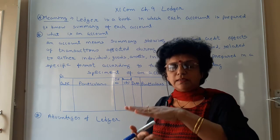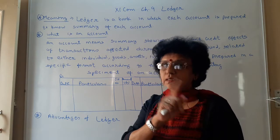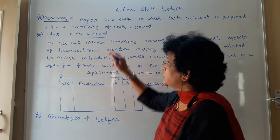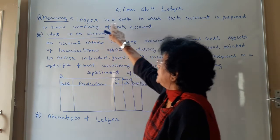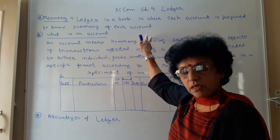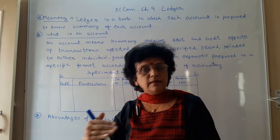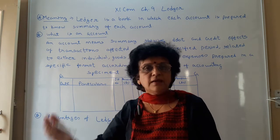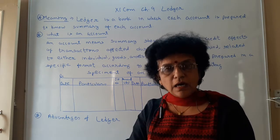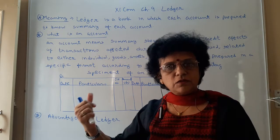So ledger is a book; it is called the principal books of account and the fundamental books of account. Journal is a basic book of account, and ledger is a fundamental books of account. Let us recapitulate: Ledger is a book in which each account is prepared to know the summary of each account. If there are a hundred accounts, then a hundred proforma you will prepare, a hundred times you will do the process of posting, and at the end you get the balance. All such accounts together — the book in which you record — is known as a ledger.